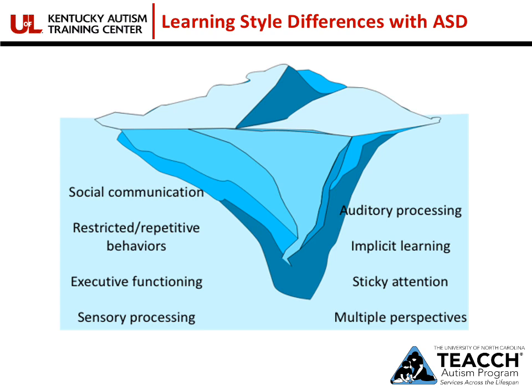In addition to the characteristics discussed earlier, there are some additional learning style differences that students with autism spectrum disorder will more than likely have. They may have delays or issues with executive functioning, organizing their thoughts and their learning. There will be some issues with sensory processing — filtering out unnecessary sensory input and focusing on what's truly important. Taking in auditory information may also be difficult; oftentimes students with autism are visual learners and need to see information as well as hear it.